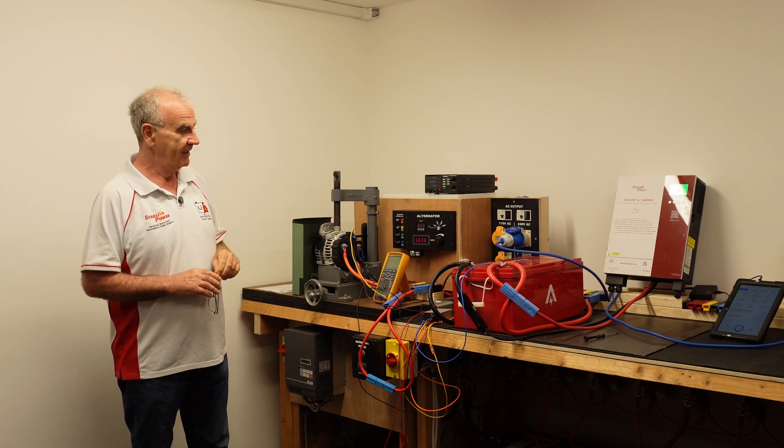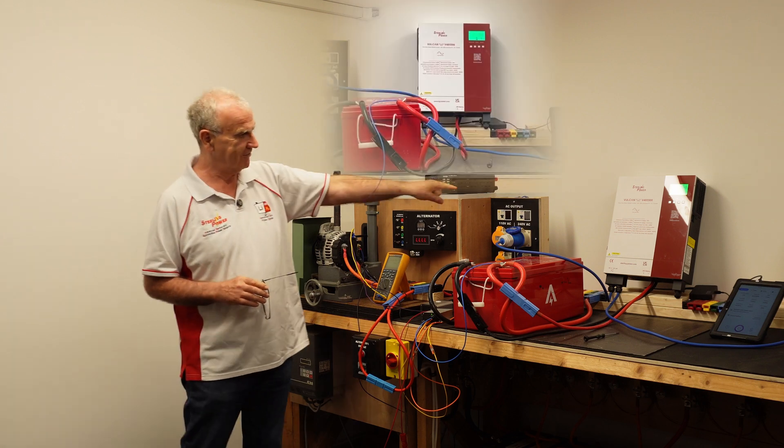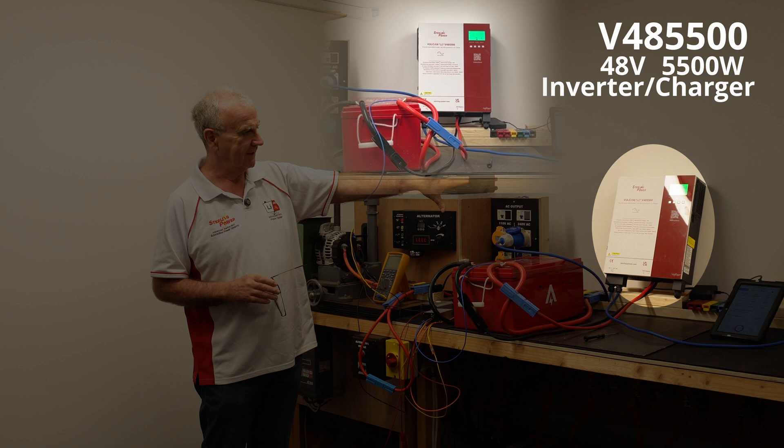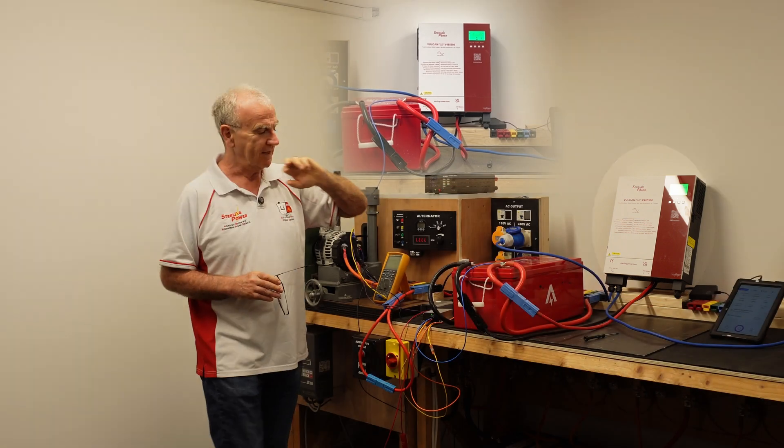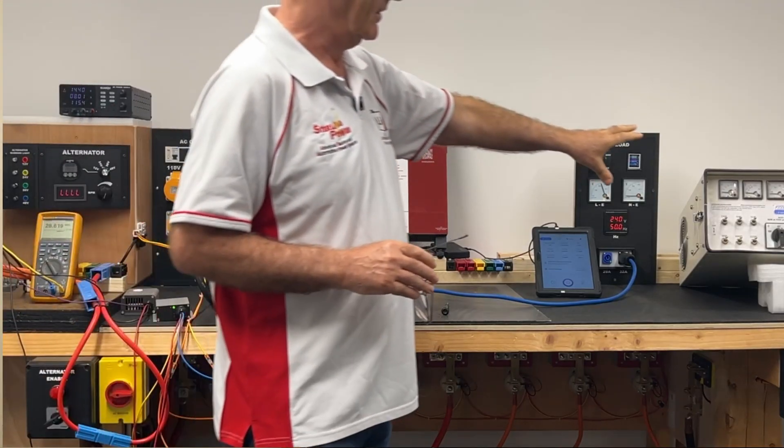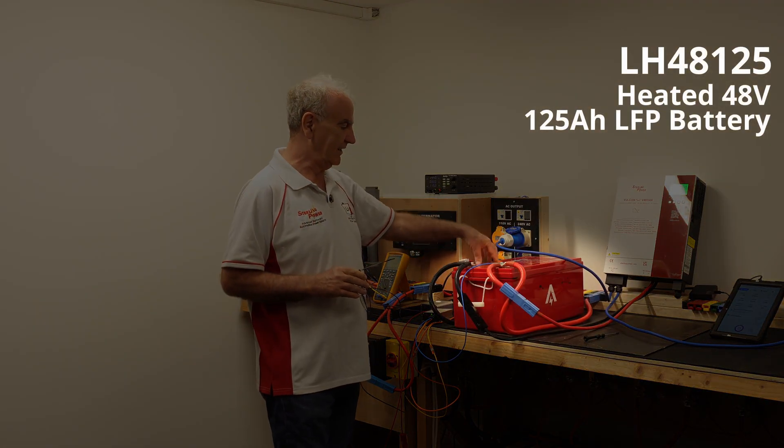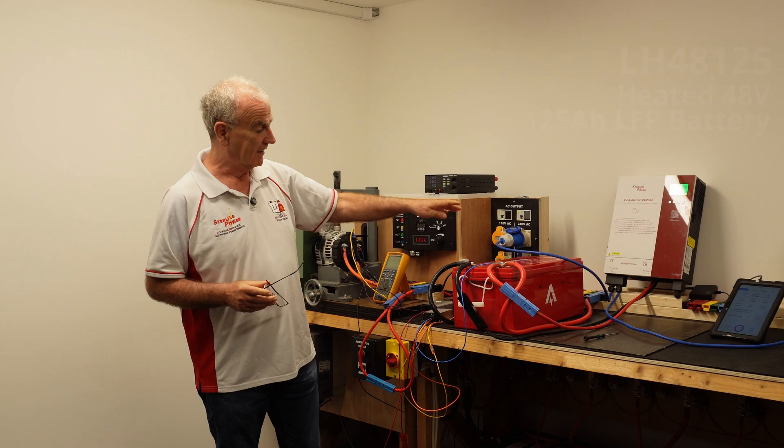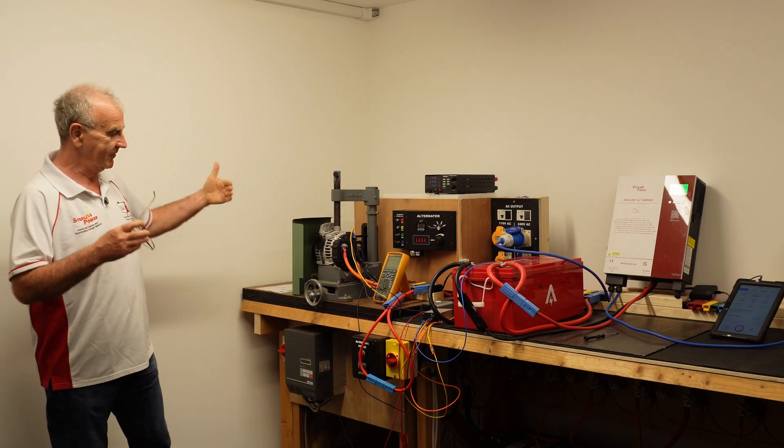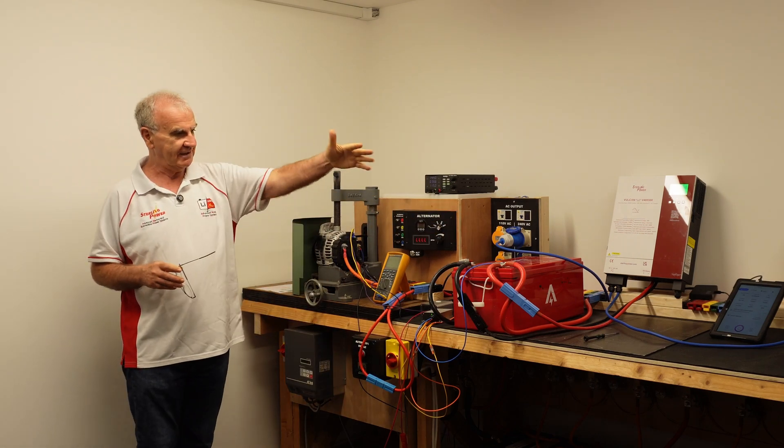Over here we have a 5.5 kilowatt Vulcan inverter, and then this is just a load to show the inverter's working and to take the battery down. This is a 48 volt 100 amp hour lithium battery.